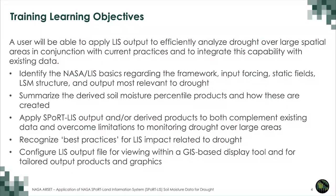After participating in this three-part training, a user will be able to apply LIS output to efficiently analyze drought over large spatial areas in conjunction with current practices and to integrate this capability with existing data. The training learning objectives are to identify the NASA LIS basics regarding the framework, input forcing, static fields, land surface modeling structure, and output most relevant to drought; summarize the derived soil moisture percentile products and how these are created; apply SportLIS output to complement existing data and overcome limitations to monitoring drought over large areas; recognize best practices for LIS impact related to drought; and configure LIS output files for viewing within a GIS-based display tool.